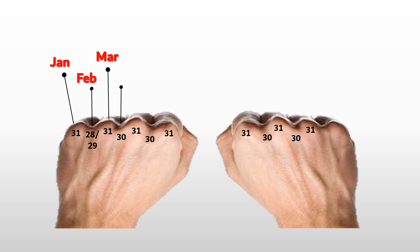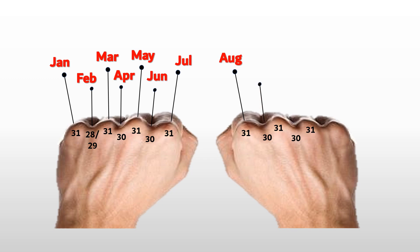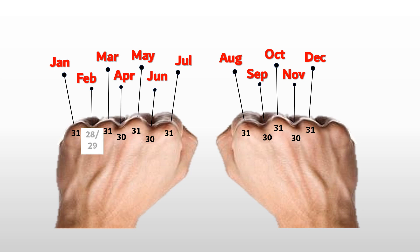30 days in April, 31 days in May, 30 days in June, 31 days in July, 31 days in August, 30 days in September, 31 days in October, 30 days in November, 31 days in December. In February there are 28 days; however, in a leap year, which occurs once every four years, February has 29 days.